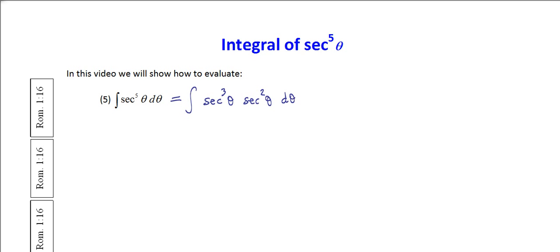We want to use integration by parts. If you're not sure what I mean by integration by parts, I have produced a video where we derive that and show an example. Basically it says — and this is one to memorize — the integral of u times dv is equal to u times v minus the integral of v times du.